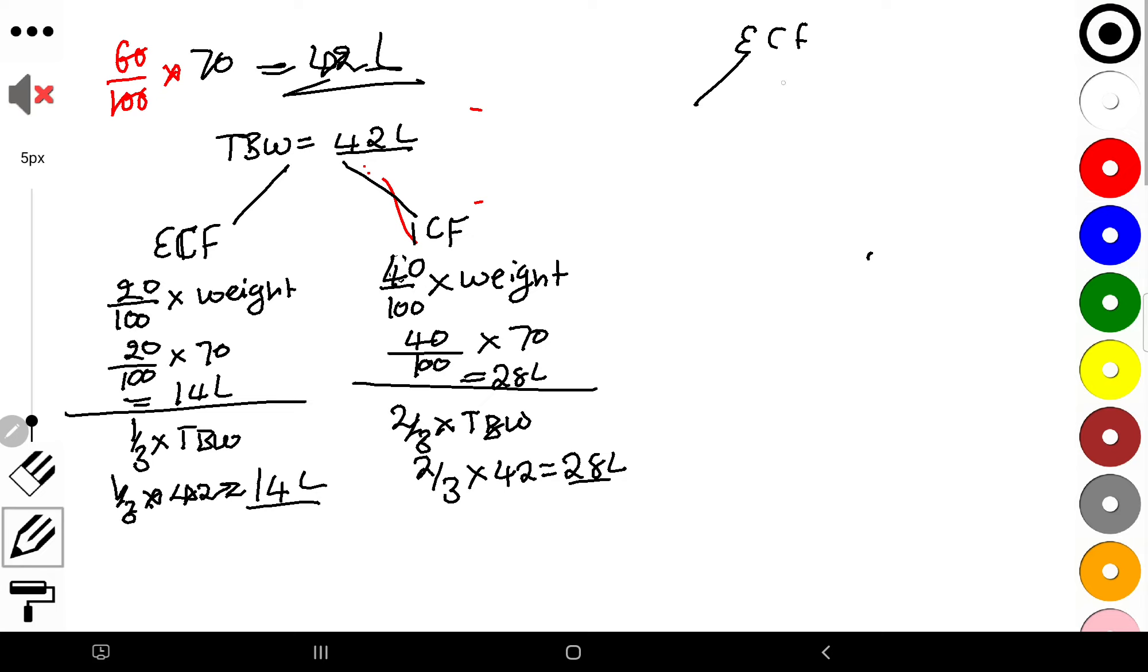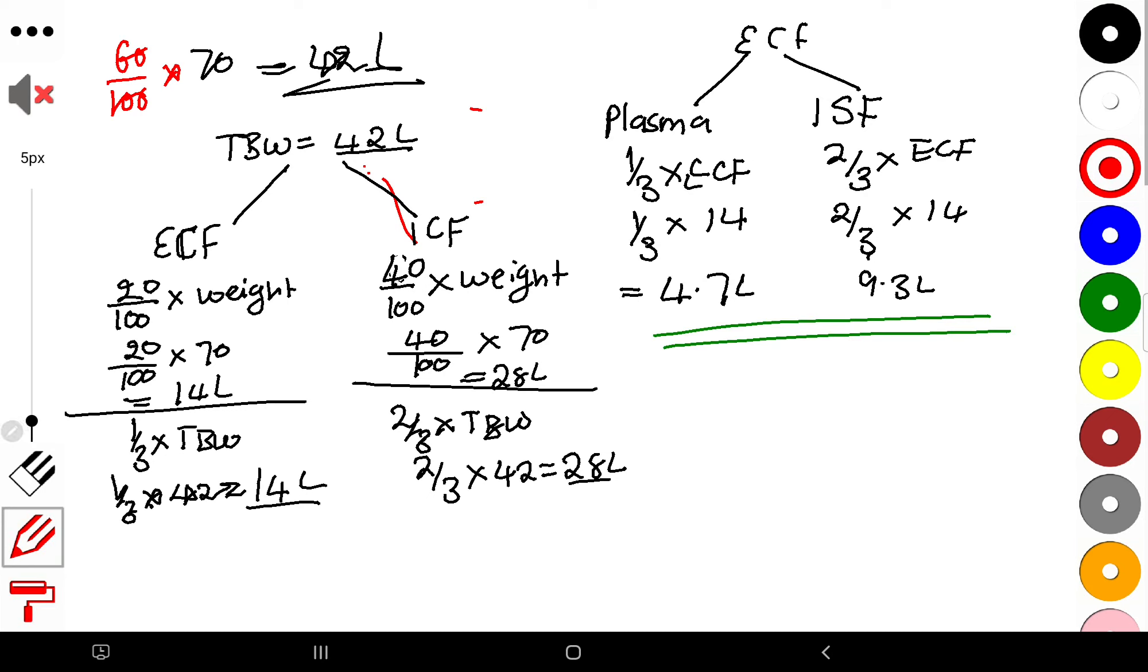But what we see is that in ECF we have plasma and we also have interstitial fluid. They usually use percentage for plasma. They say this is 5% of the weight, so you're going to calculate this as 5 over 100 times 70, and this is going to be 3.5.